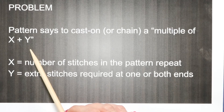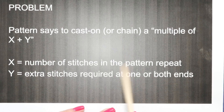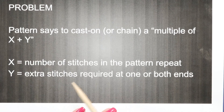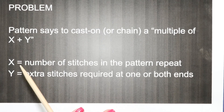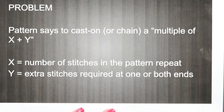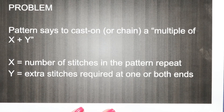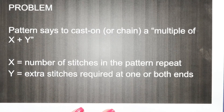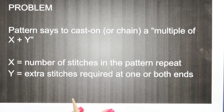The pattern says to cast on or chain a multiple of x plus y — we've already covered that part. x is the number of stitches in the pattern repeat, and y is the extra stitches required at one or both ends.